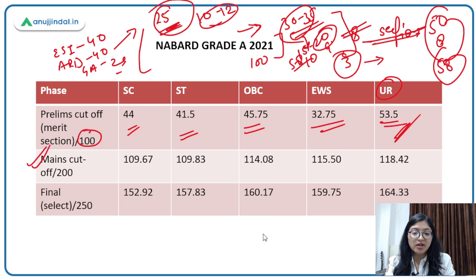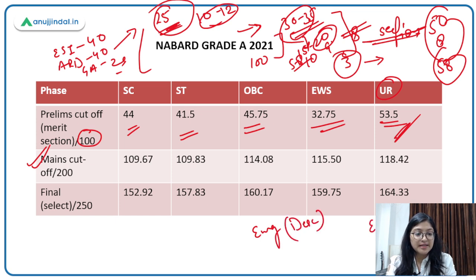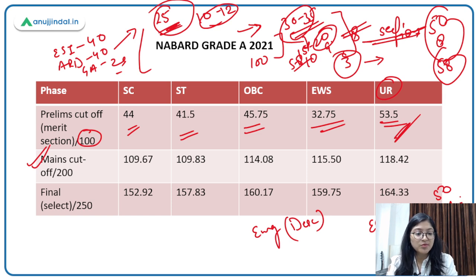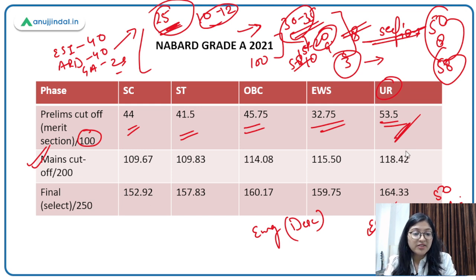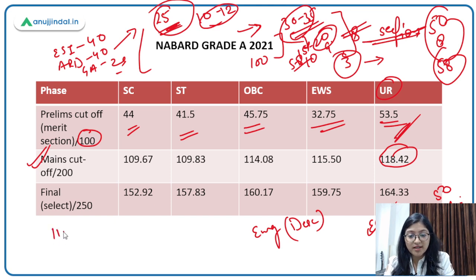Now talking about Mains — the Mains has English descriptive, then ESI and ARD. There are 50 objective marks and 50 descriptive marks in mains. For the unreserved category, the cutoff in mains was 118.42.